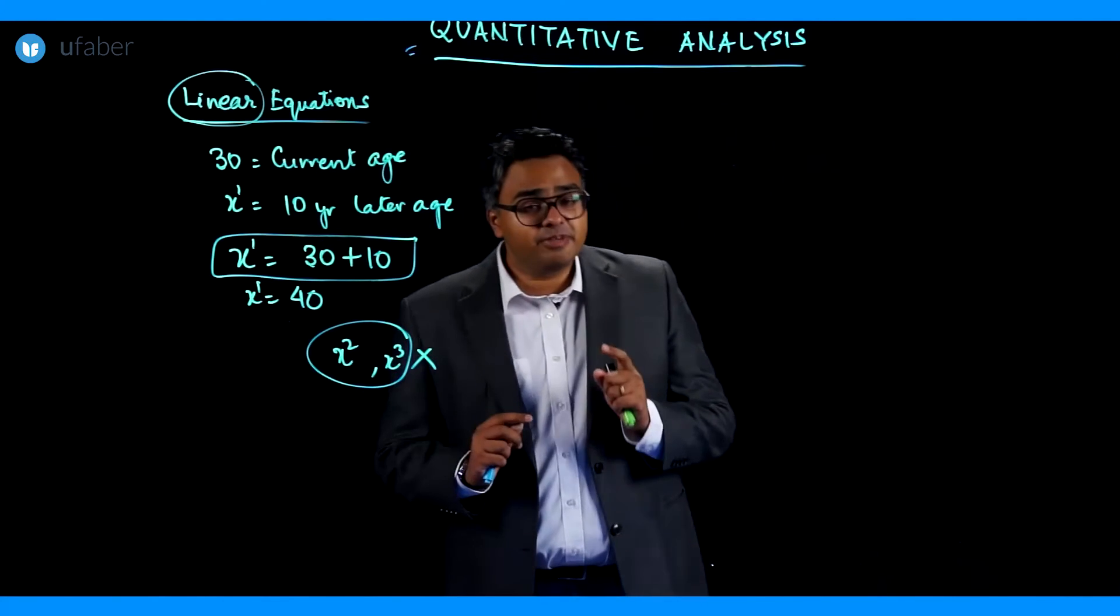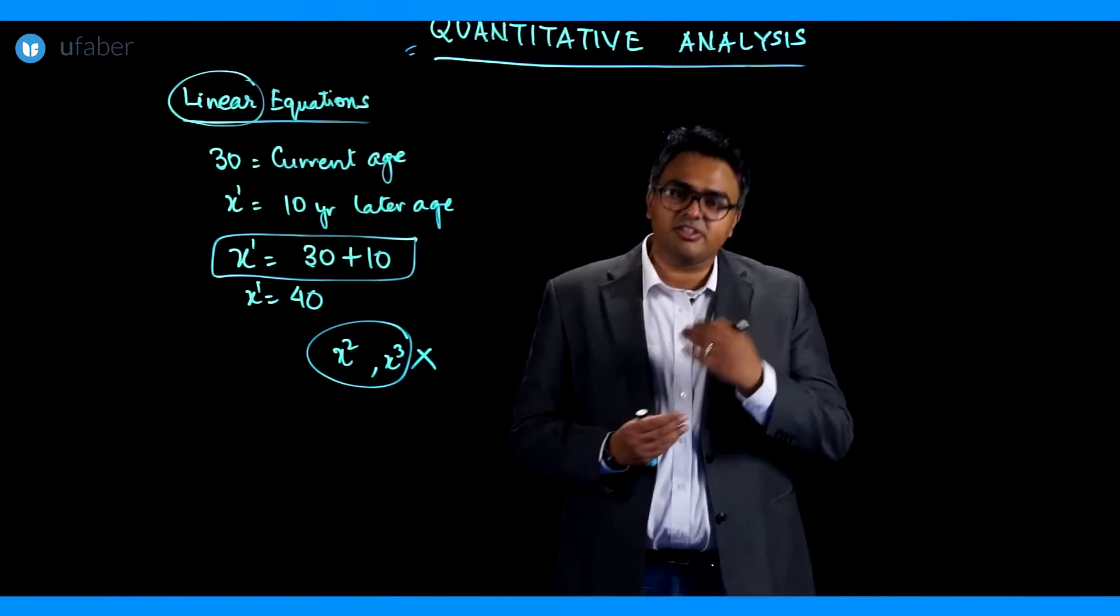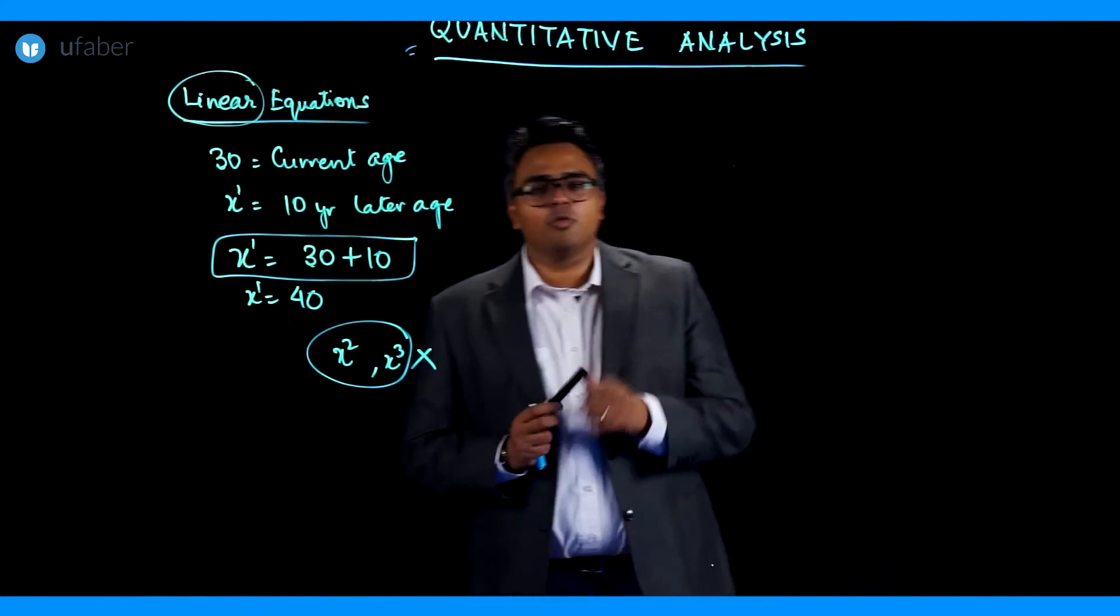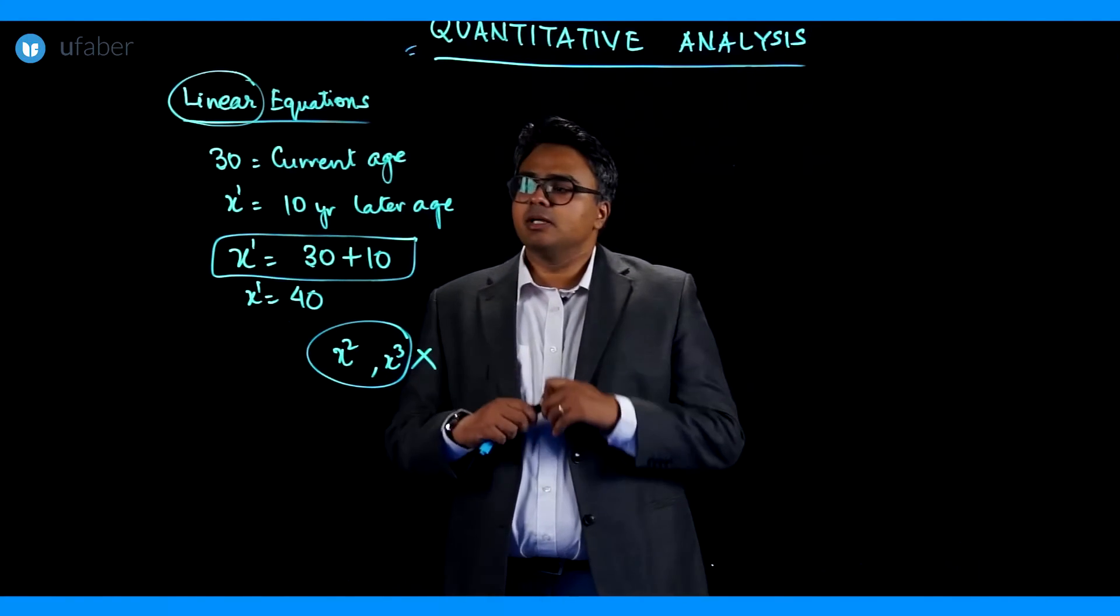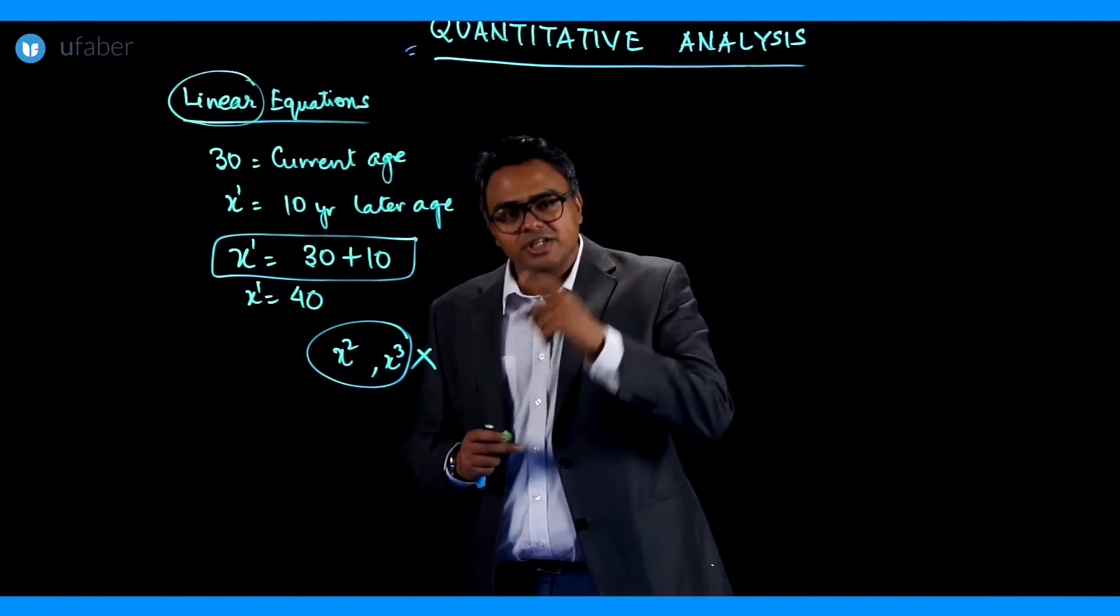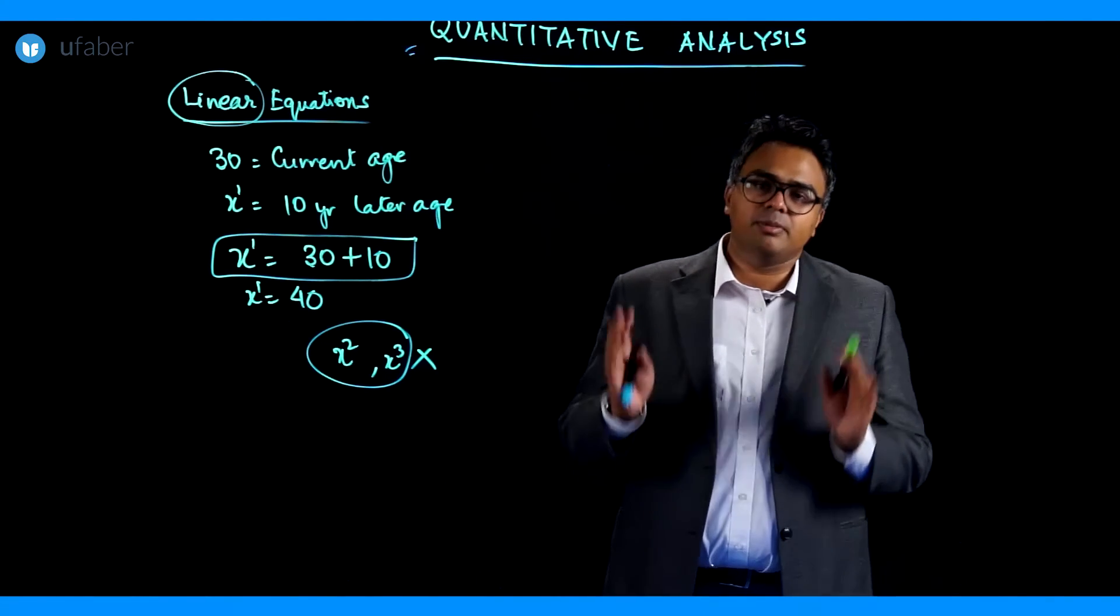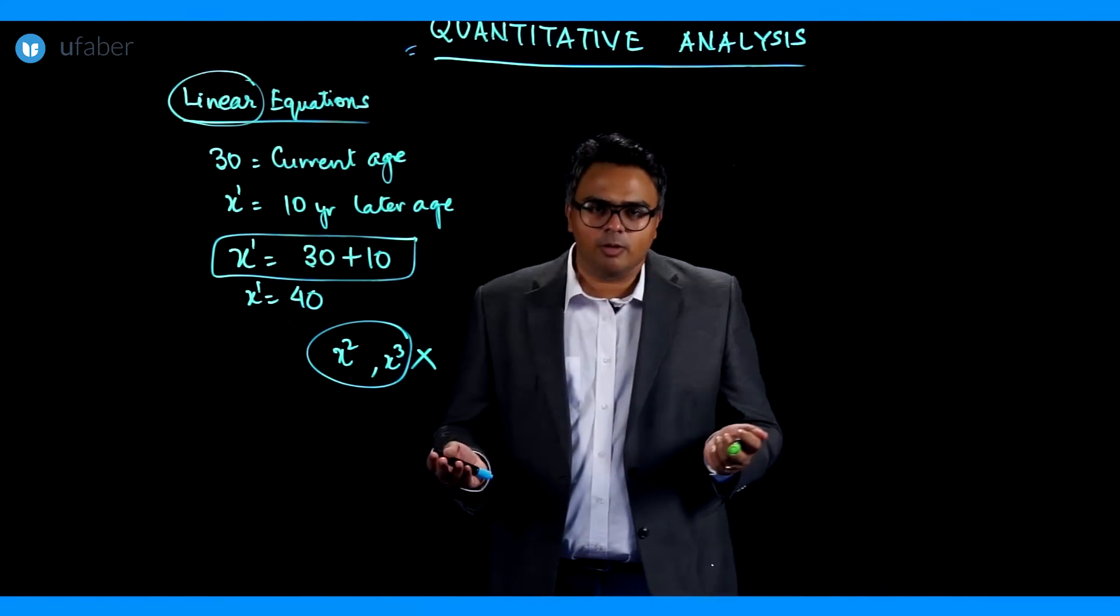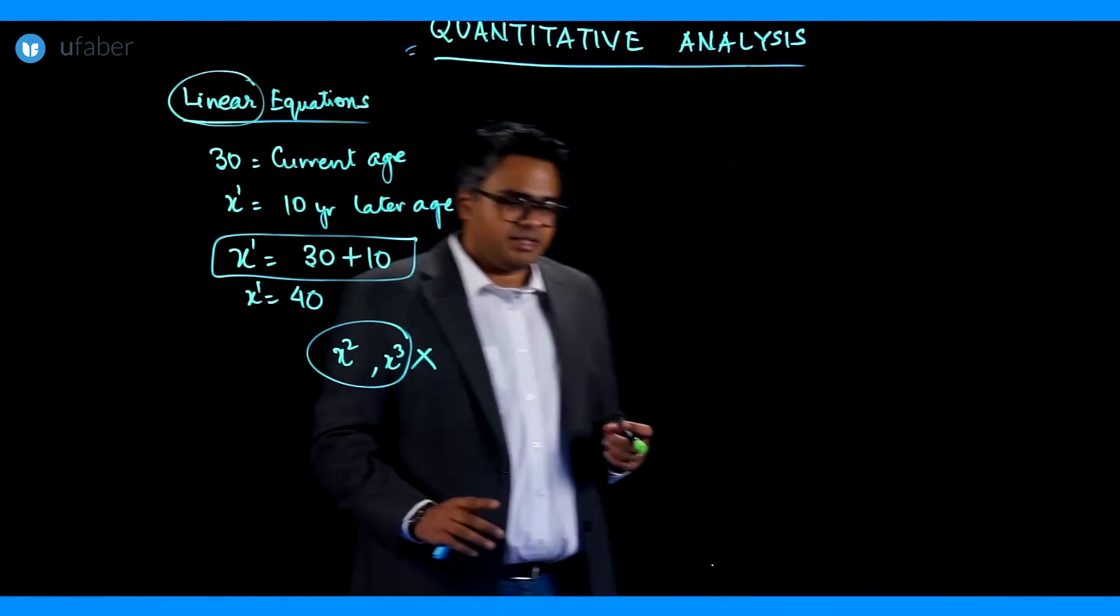Now there are certain very specific rules regarding linear equation. Let's find out what those rules are. Number 1, first thing is the number of linear equations you need are exactly equal to the number of variables you have. That means eventually we want to solve a problem. In this problem, how many variables were there? My age 10 years later.